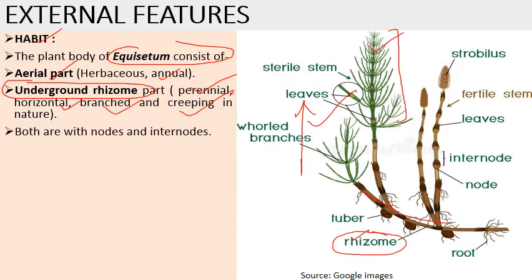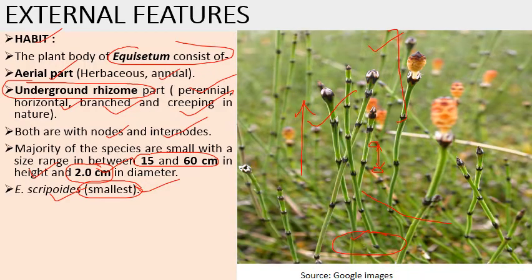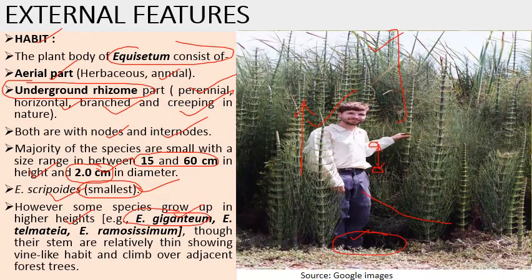The plant is differentiated into nodes and internodes. The space between two nodes is known as an internode. The majority of species range in size from 15 to 60 cm in height with a diameter of 2.0 cm. Equisetum scrypoides is the smallest species, while Equisetum giganteum is the largest species of Equisetum.